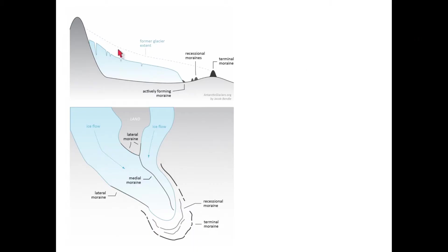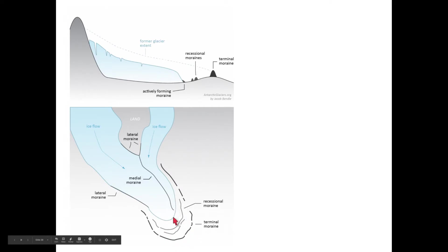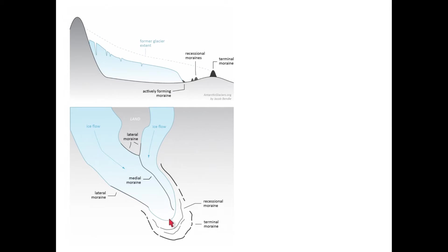Here's a diagram showing a glacier in retreat — it used to be thicker and extend farther downslope. Here's the terminal moraine, a series of recessional moraines, the end moraine, and lateral and medial moraines. When glaciers retreat, they lose volume and length. The end moraine marks a pause, recessional moraines mark intermediate pauses, and the terminal moraine marks the farthest extent.